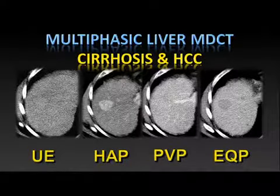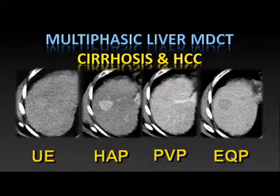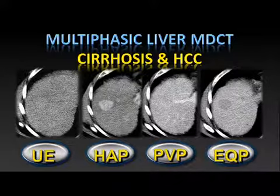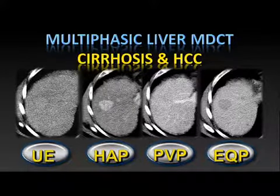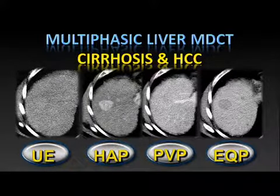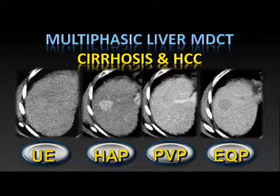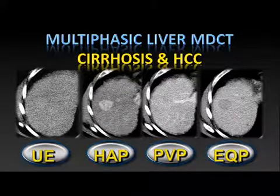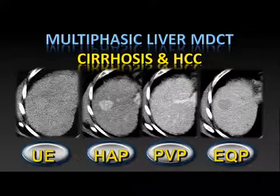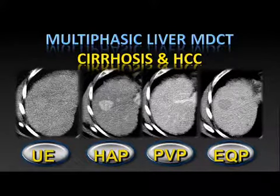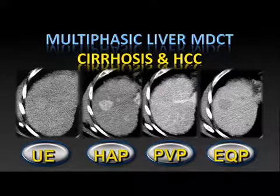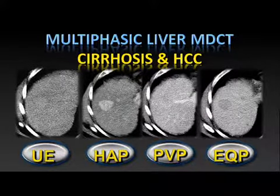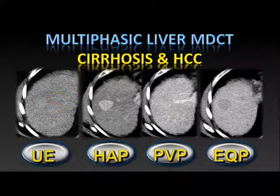Here is a case borrowed from Rendon Nelson showing the unenhanced phase, arterial phase, portal venous phase, and equilibrium phase. There's an enhancing hepatocellular carcinoma — classic for that disease. You don't see it on the pre-contrast scan and don't really appreciate it on the portal venous phase. You see it nicely on the delayed equilibrium scan, with two other lesions uniquely identified there. The point is we need to be very careful about choosing the appropriate number of phases. It's ironic that perhaps the single best phase for HCC is an old five- to seven-minute delayed scan.